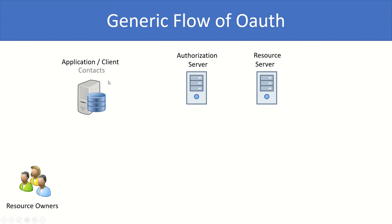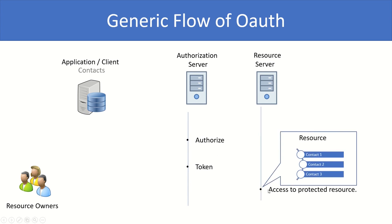In order for my application to access contact information of the user, three endpoints will be used. Two endpoints will be hosted by the authorization server itself: the first one is the authorize endpoint and the next one is the token endpoint. There will be one more endpoint belonging to the resource server, which gives you the information your application is looking for — in our case, it will be contacts.